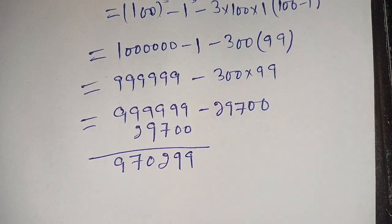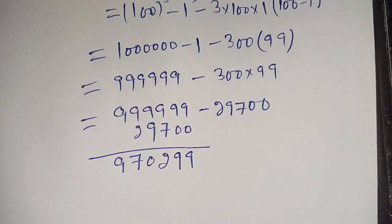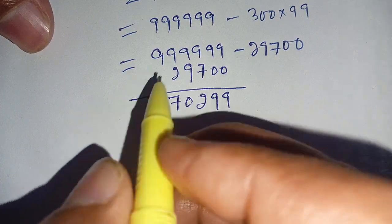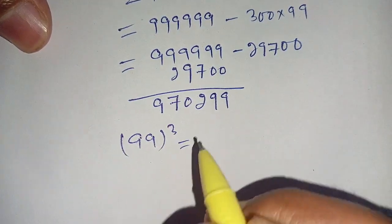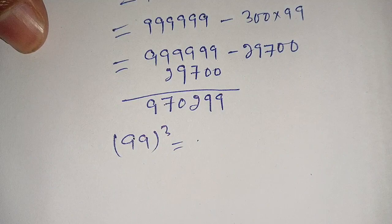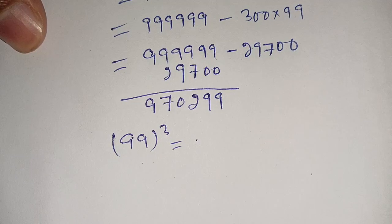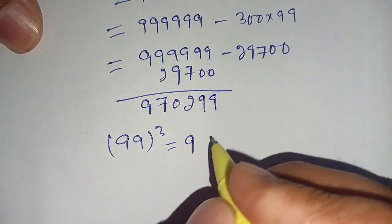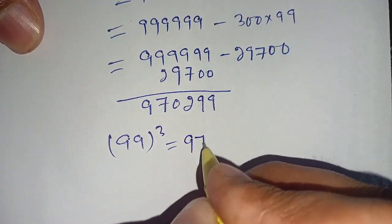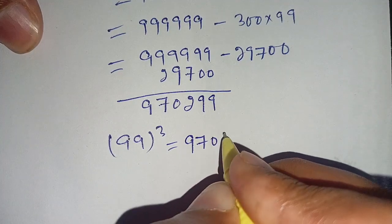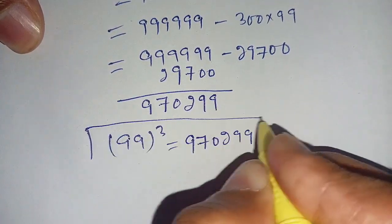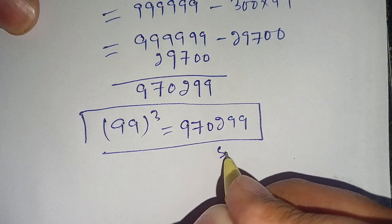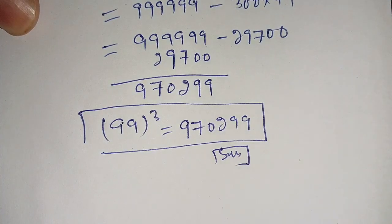Thus, 99 whole cube is equal to 970,299. If you are watching here, make sure that you subscribe to our channel for more informative videos. See you in the next video. Bye!